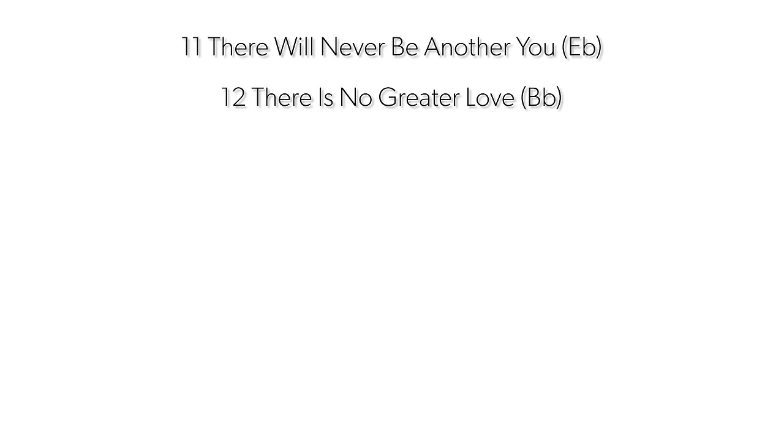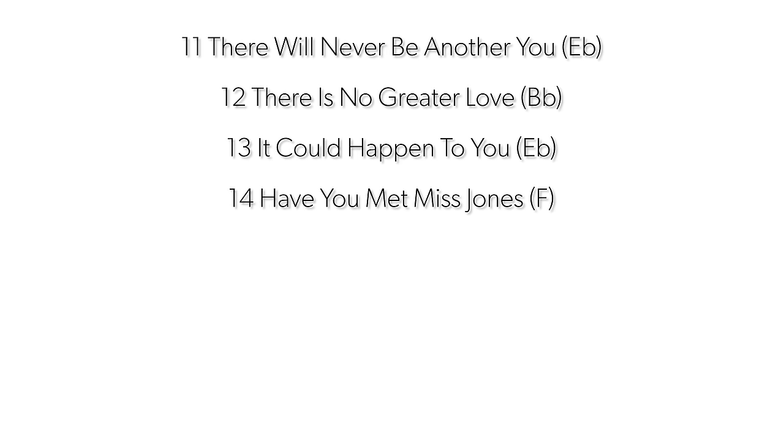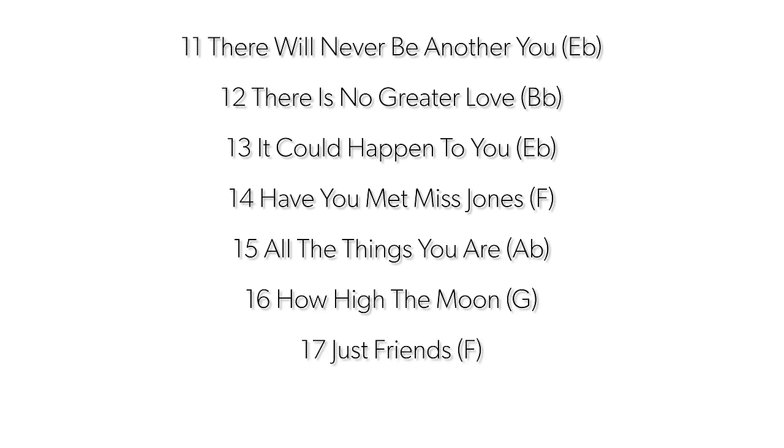These songs are a little bit more difficult and complicated, but they're also very common so you're probably going to run into them at jam sessions or gigs where you're calling standards. Songs like There'll Never Be Another You, There's No Greater Love, It Could Happen To You, Have You Met Miss Jones, All The Things You Are, How High the Moon, Just Friends, and Out of Nowhere. I'm also taking care to have different keys in there — we don't want to play the same key all the time. If you want to hear that, just listen to an AC/DC live album where pretty much everything is in the key of A.